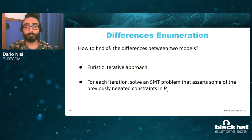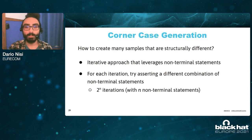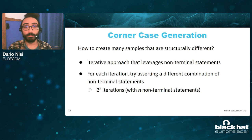This was really handy when implementing the differences enumeration technique, with which we want to find all the differences between two models. This is a heuristic iterative approach, in which for each iteration we solve an SMT problem that asserts some of the previously negated constraints in the second model, driving the SMT solver to find new ways and new discrepancies between the two models. We also implemented the corner case generation technique, by which we create as many samples as possible that are also structurally different. To achieve that, we leverage the non-terminal statements in our models — for each iteration, we try to assert different combinations of non-terminal statements, resulting in files that are structurally different because the original software would use different code paths to validate them.